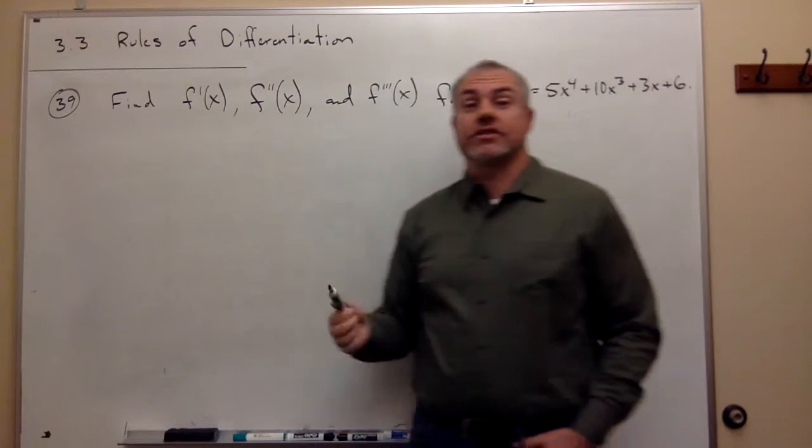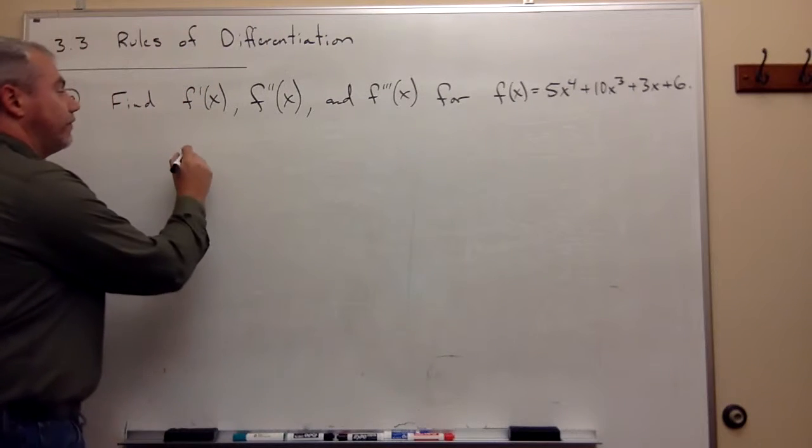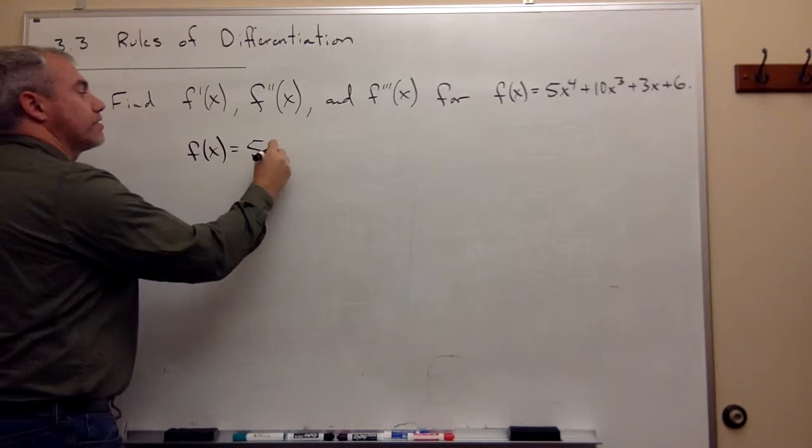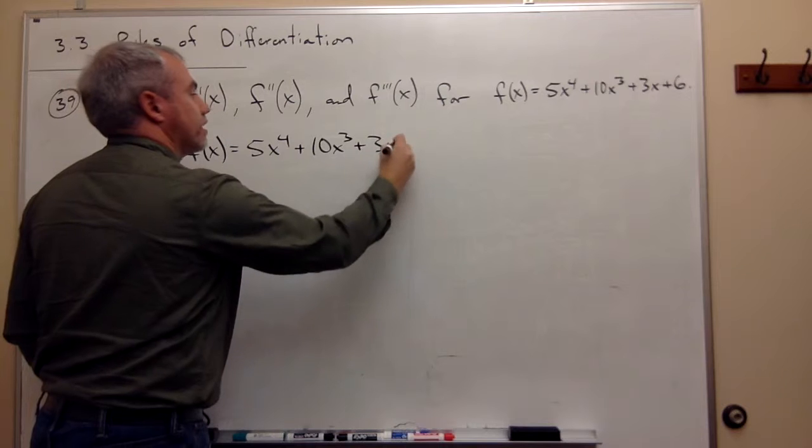Okay, this is just an exercise in iterating the power rule. So let's start out with a function. I'll rewrite it really quick. f of x is 5x to the fourth plus 10x cubed plus 3x plus 6.